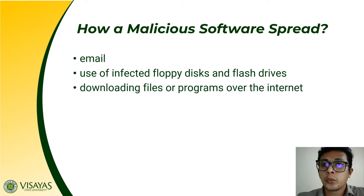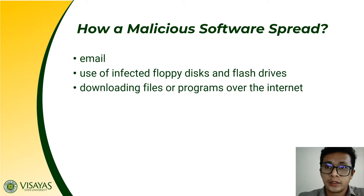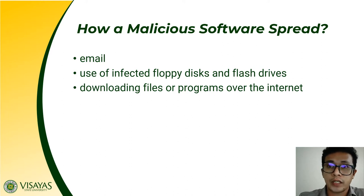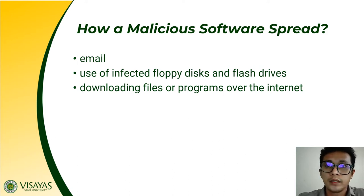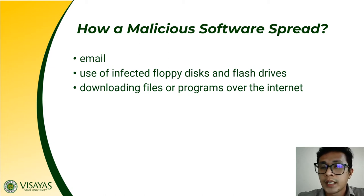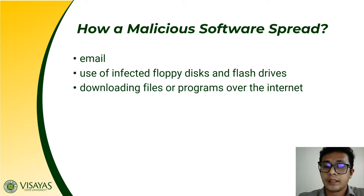Another way in which malicious software can spread is by downloading files or programs over the internet. Downloading files or programs over the internet also paves the way for your computer to be infected, because some files and programs over the internet have malicious software attached to them. So the moment you install or open these files and programs, the malicious software also gets installed in your system alongside with the program — unknowingly. Take note that malicious software can also get attached to computer games downloaded from an unknown source.